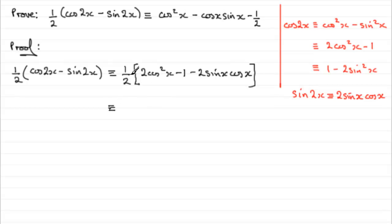So, now I'd want to expand the bracket, and if we do that, half of 2 cos squared x is going to give me cos squared x. So, that's looking good, we've got that first term. And then we've got half times the minus 1, which is minus 1 half, so that's looking good.